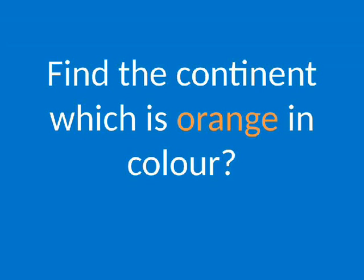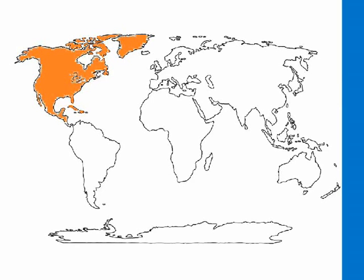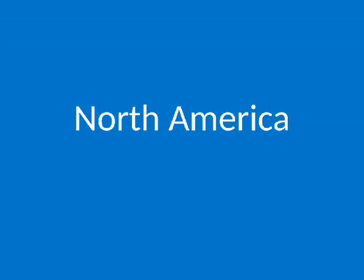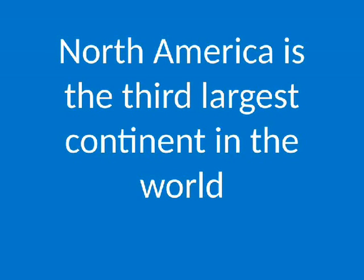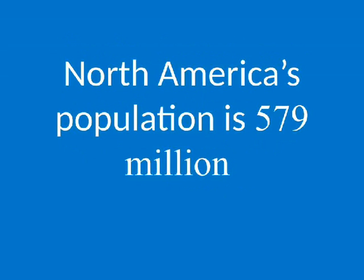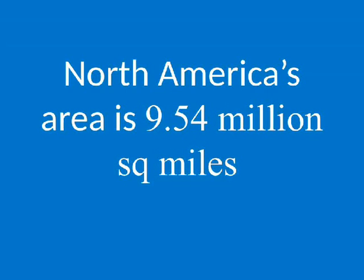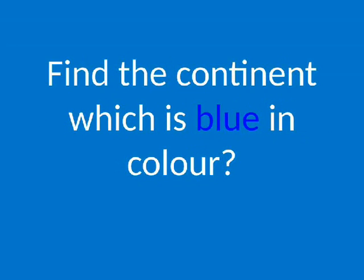Find the continent which is orange in color. North America. North America is the third largest continent in the world. North America's population is 579 million. North America's area is 9.54 million square miles.